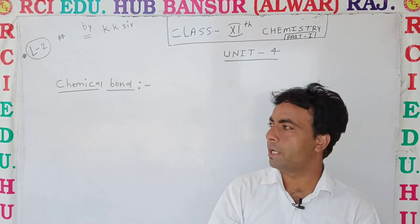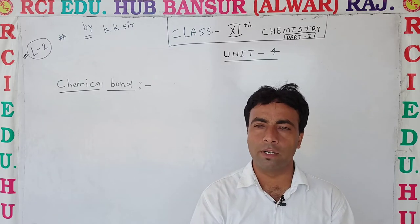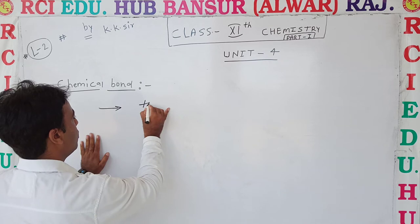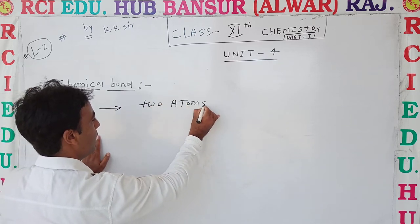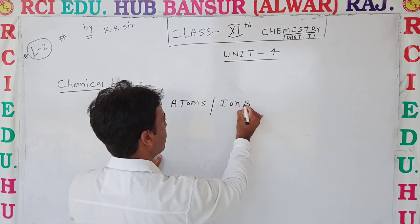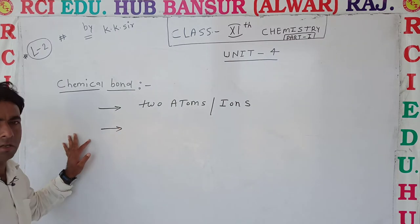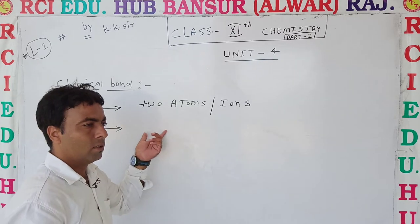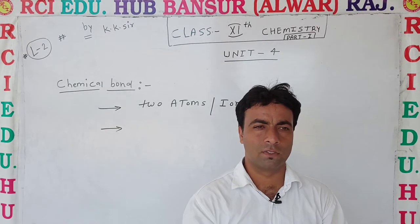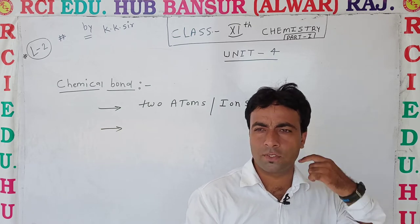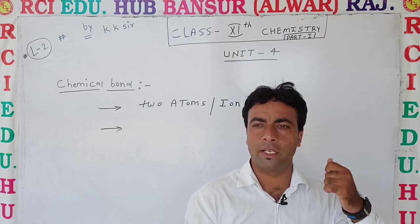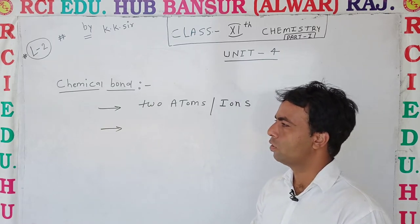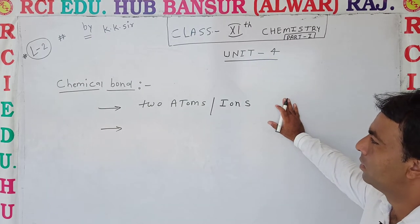First of all, what is the definition of chemical bond? Chemical bond formation takes place between two atoms — it may also be between two ions. When two atoms or two ions come together by attraction and by the sharing of electrons, a strong connection forms. That is called, in one word, chemical bond.